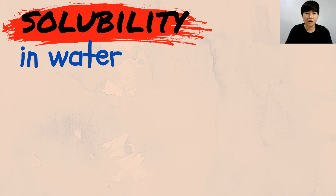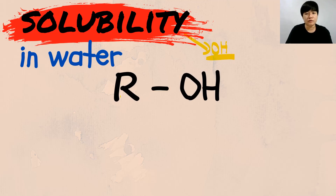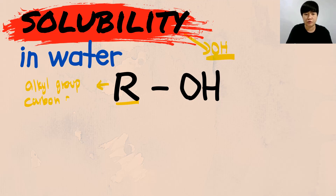The most important thing about the solubility of alcohol in water is to learn these two new terms. We know that in an alcohol compound, you have your R group. Your R group represents your alkyl group — your carbon-carbon group. You also have the presence of your OH, which is your hydroxyl group.